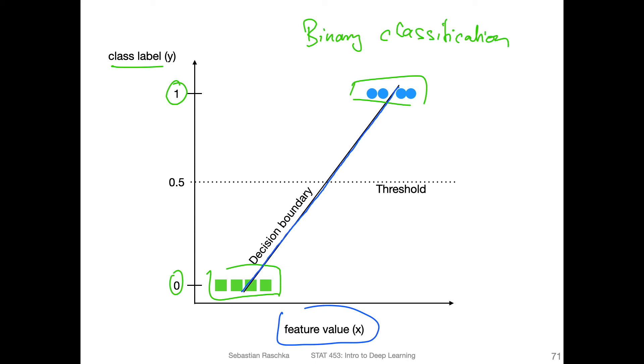Except now the difference is really that in linear regression, we usually have continuous values, not only zeros and ones, and we don't have the threshold function. In the ADALINE, after fitting this model, we apply this threshold function, let's say at point five between zero and one.